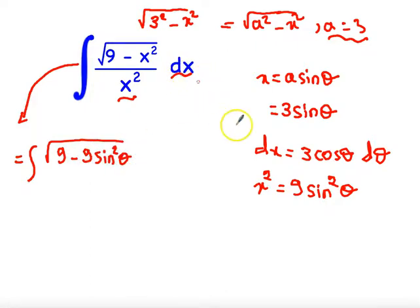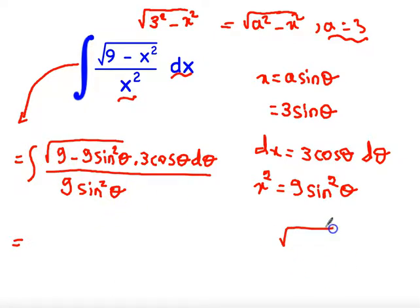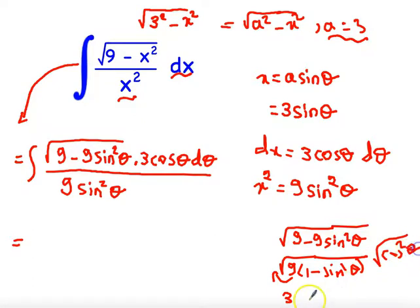Substituting into the integral, the radical becomes √(9 − 9·sin²θ). Taking 9 as a common factor gives √(9·(1 − sin²θ)). Since √9 = 3 and 1 − sin²θ = cos²θ, the radical simplifies to 3·cosθ.